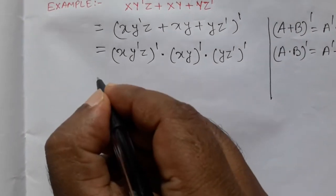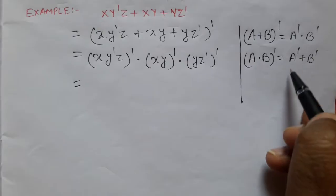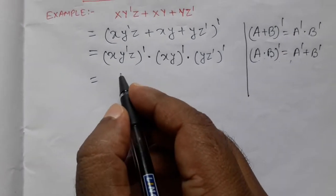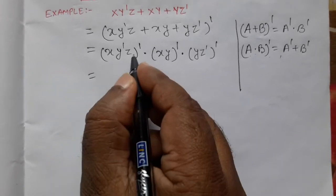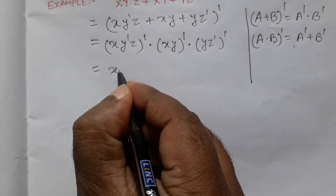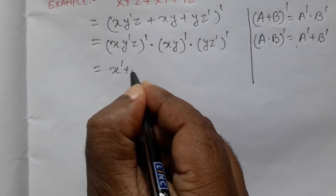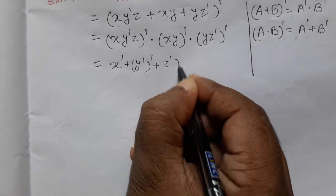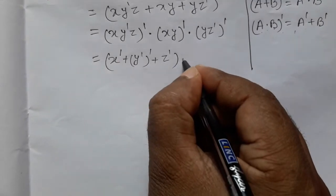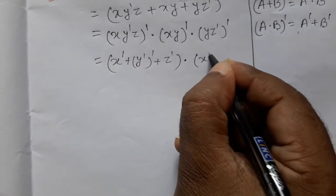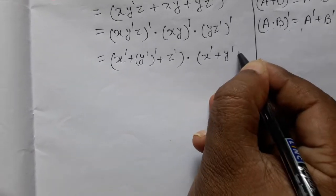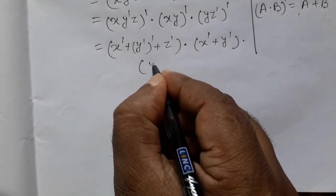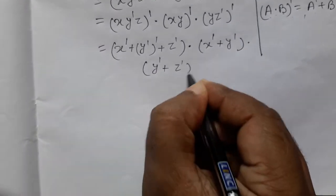Now again we follow the second rule: A into B whole complement equals A-complement plus B-complement. So here we get x-complement plus y-complement whole complement plus z-complement, as one part, into x-complement plus y-complement complement, into the third part y-complement plus z-complement.